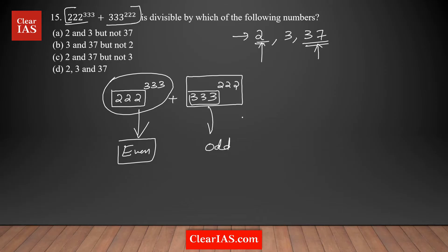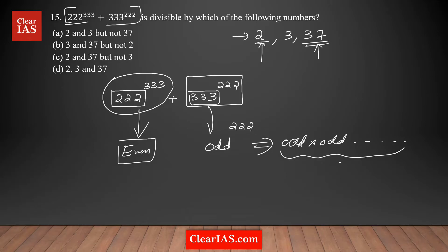The second term is 333 to the power of 222. Since 333 is an odd number, and an odd number multiplied by itself any number of times is always odd, this term is odd. So we have an even term plus an odd term, and the final result is going to be odd.